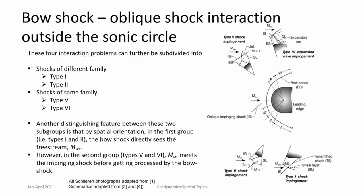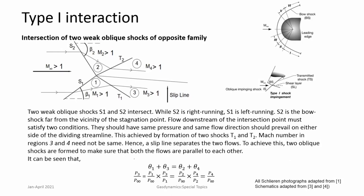First let us look at shock interactions happening with weak shocks beyond the sonic circle, where shocks are relatively weak. These are called type 1, type 2, type 3, type 4, type 5, and type 6. In type 3 and 4, the shock interacts within the sonic circle where flow is subsonic. In type 1 interaction, two shocks of opposite kind interact — S1 is a left running shock while S2 is a right running shock. Both shocks are relatively weak, and as a consequence two other shocks T1 and T2 are formed.